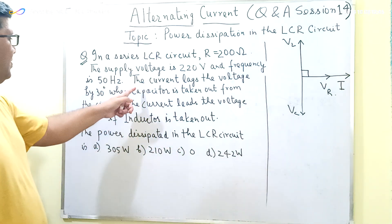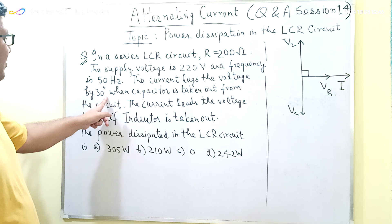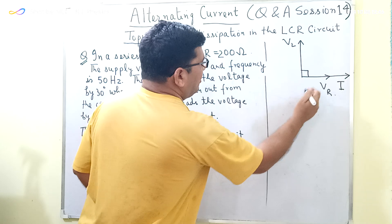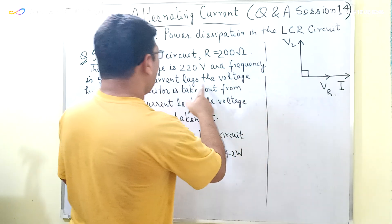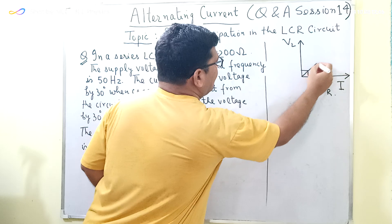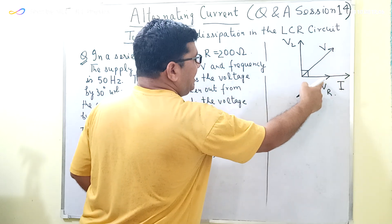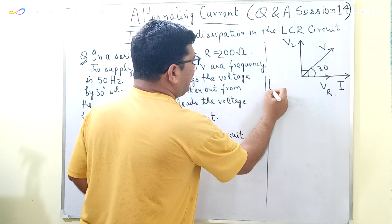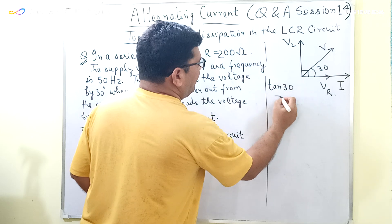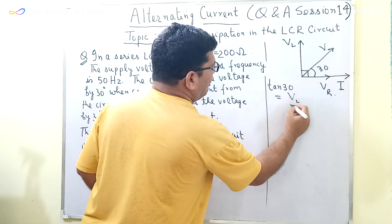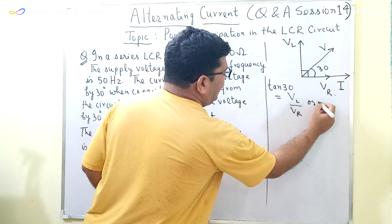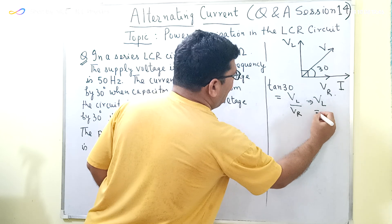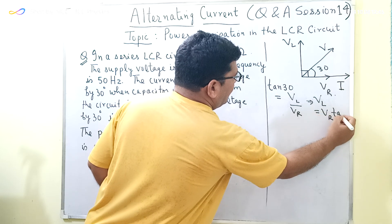In this question, the current lags the voltage by 30 degrees when the capacitor is taken out from the circuit. So when the capacitor is taken out, the current lags the voltage by 30 degrees — this is the voltage, and the current is lagging by 30 degrees. From this phasor diagram, tan 30 = VL / VR, which implies VL = VR · tan 30.